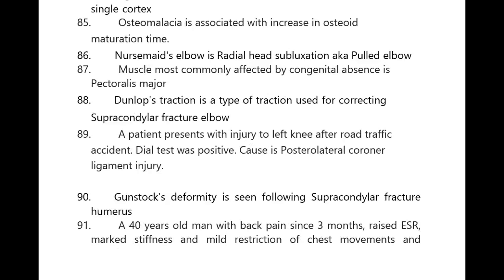Osteomalacia is associated with increase in osteoid maturation time. Nursemaid's elbow is radial head subluxation or pulled elbow. Muscle most commonly affected by congenital absence is pectoralis major. Dunlop's traction is a type of traction used for correcting supracondylar fracture of the elbow. A positive dial test causes posterolateral coronary ligament injury. Gunstock deformity is seen following supracondylar fracture of the humerus.